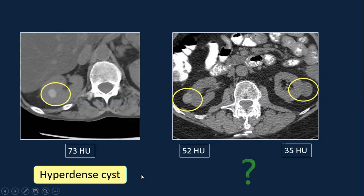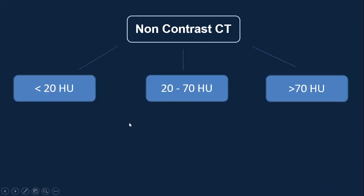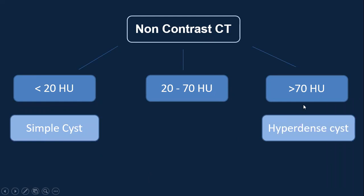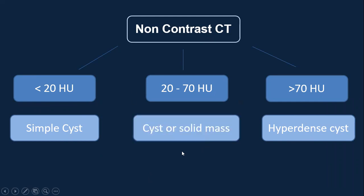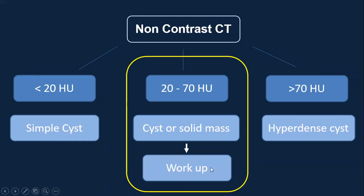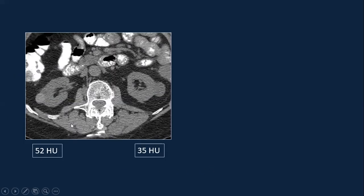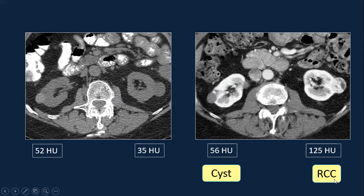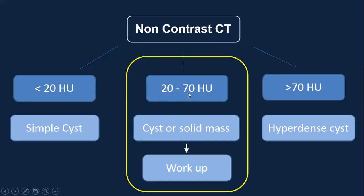So what do we do now? When we come across a renal lesion on non-contrast CT, it falls into one of three categories. If it's less than 20 Hounsfield units, most of the time it's a simple cyst. If it measures greater than 70 Hounsfield units, it's a hyperdense cyst. Between 20 and 70, there is a big overlap between cysts and solid renal masses — this is the category that needs to be worked up. In our patient, contrast was given: the right lesion did not change much, confirming hyperdense cyst, but the left lesion enhanced avidly and was renal cell carcinoma.